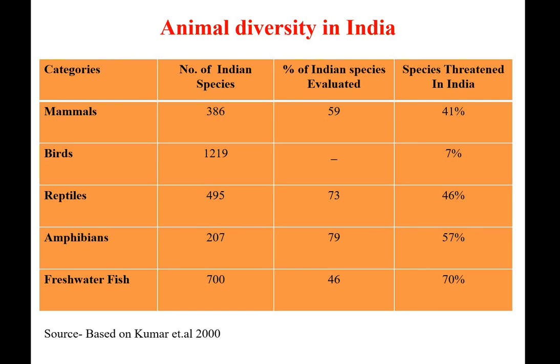Regarding animal diversity in India — number of Indian species, percentage evaluated, and species threatened: mammals have 386 Indian species, 59 evaluated, and 41 percent threatened. Birds have 1,219 species listed as number of Indian species, with 7 percent threatened in India.